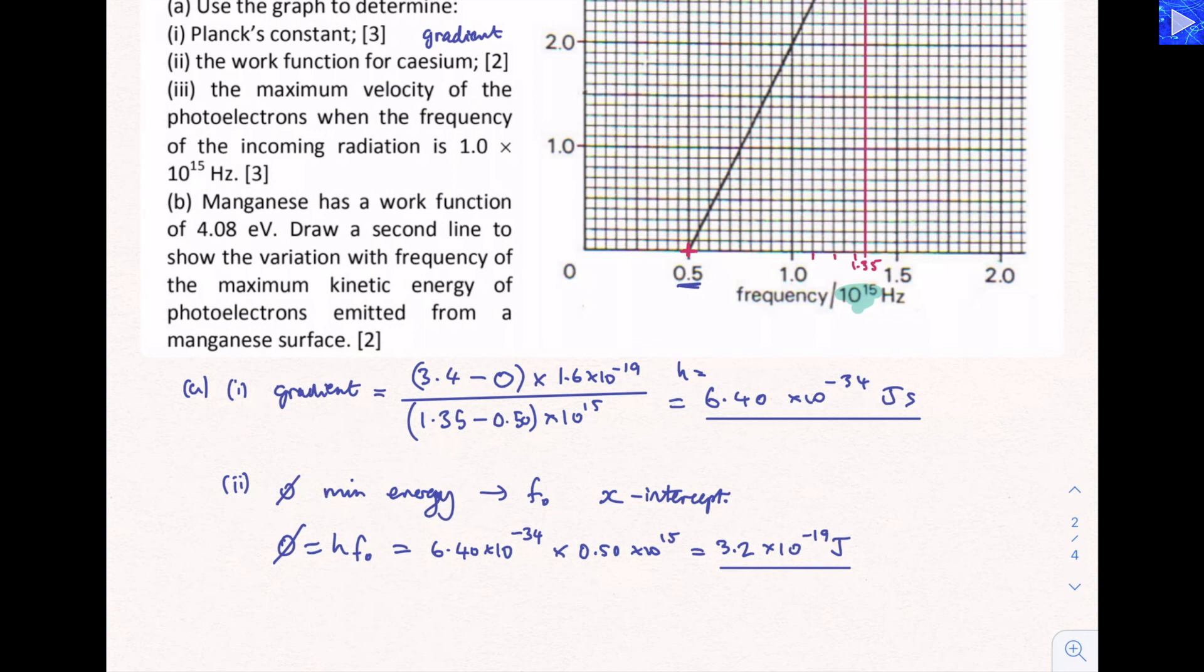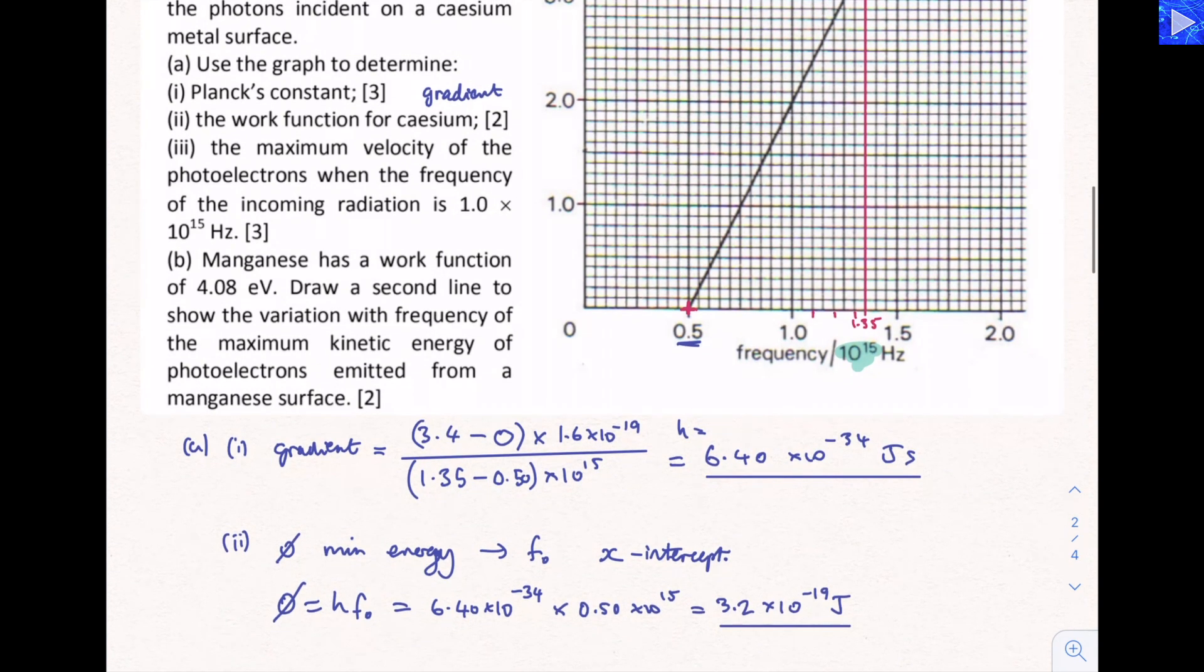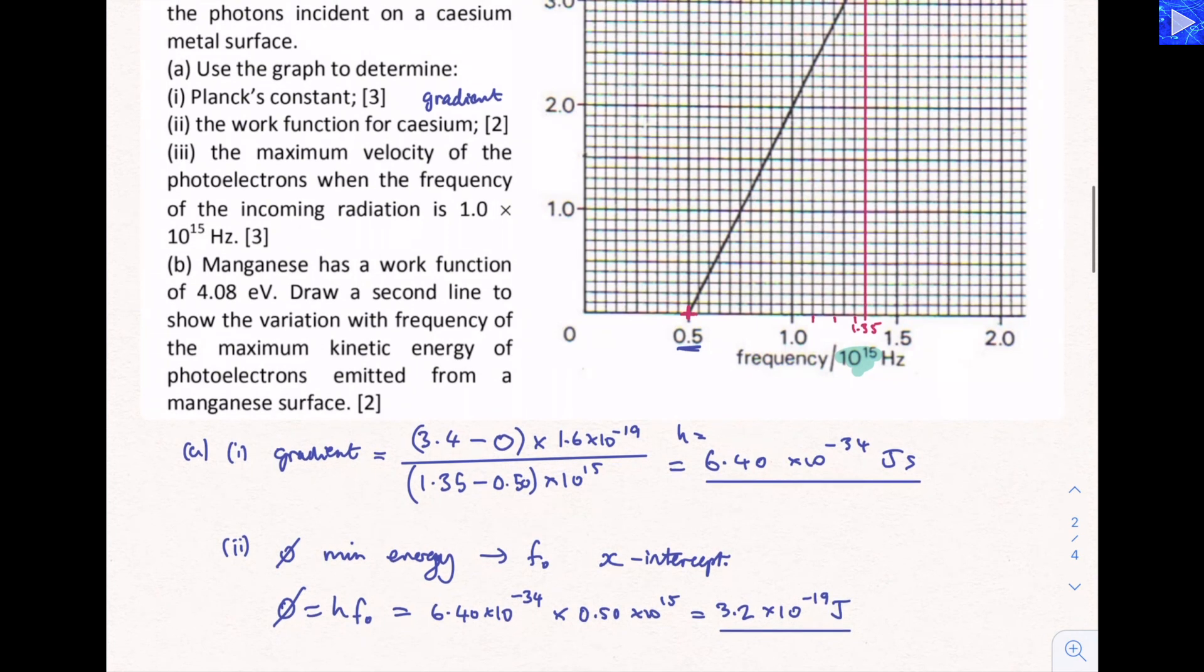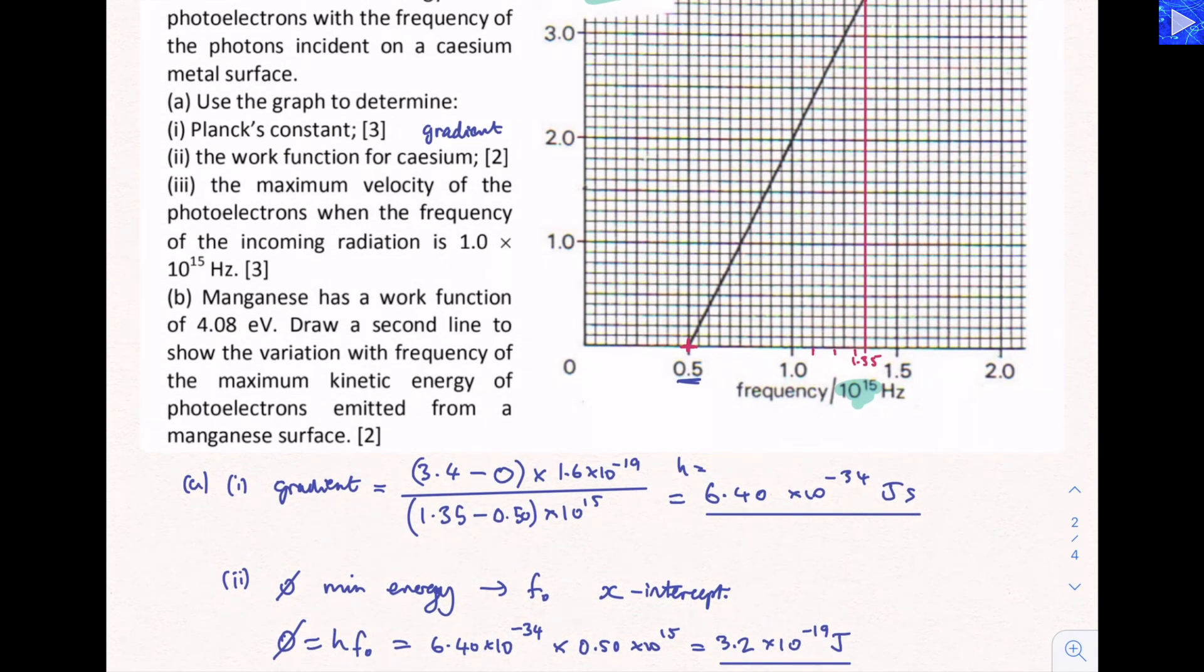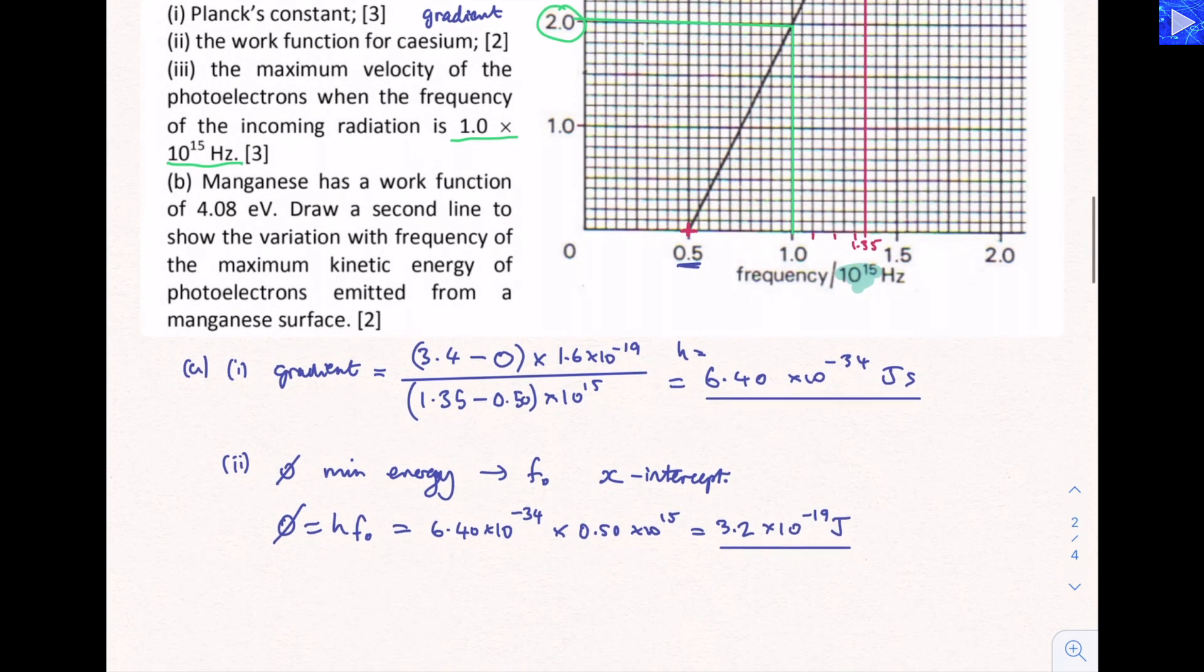Part three. What's the maximum velocity of photoelectrons when the frequency of the incoming radiation is 1.0 times 10 to the 15 hertz? So I'm going to mark that out with a different color, using this fairly bright green here. So 1.0 times 10 to the 15 hertz is here. We go up to the line at that point and then go across to see what is the energy. And you can see it's 2.0, and that's eV.